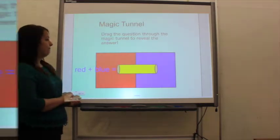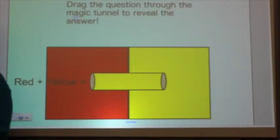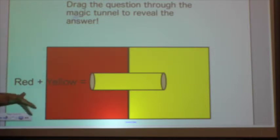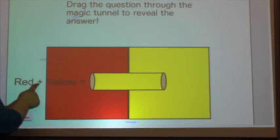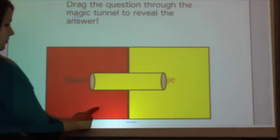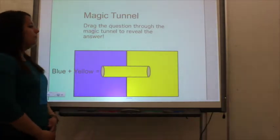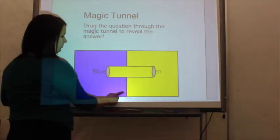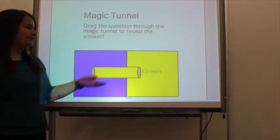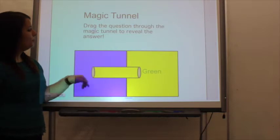To reinforce the idea again, we have our magic tunnel with the same directions. This time it is red plus yellow equals — and ideally I would have the students come up and drag it through the magic tunnel. We find out that red plus yellow equals orange. On the last one, we have blue plus yellow equals green. There were some technical difficulties because the image wasn't aligned correctly, but this is something you would figure out on your own in the classroom. Blue plus yellow equals green.